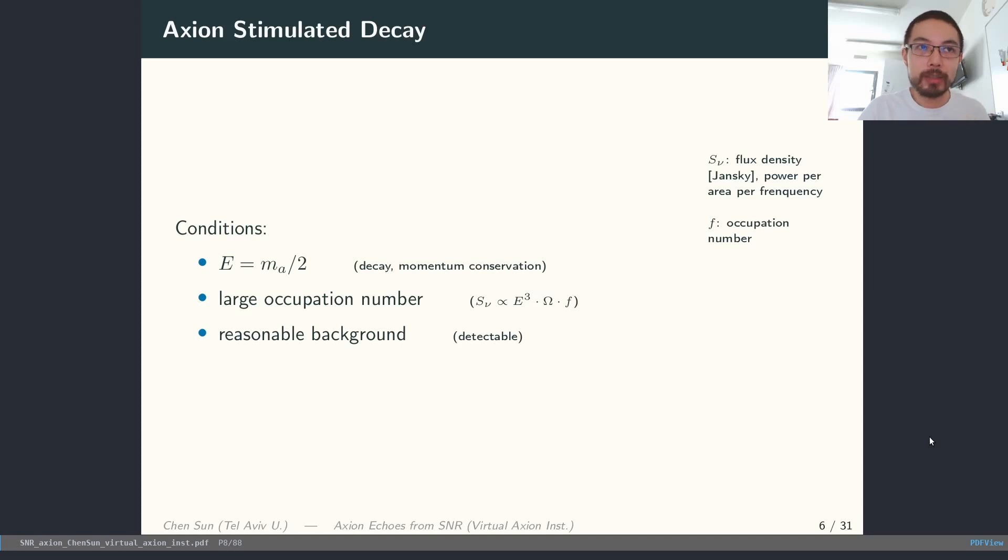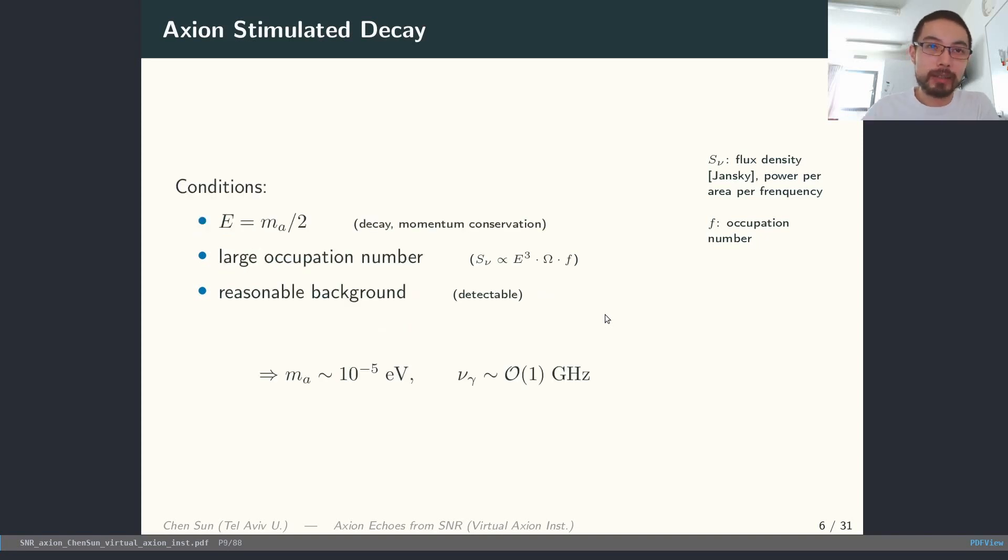Next, because we want the Bose enhancement, which happens only if there is a large phase-space density. In terms of the flux density, if we have a fixed flux density here, which is defined as the power per area per frequency, we want to look at the low energy end such that the phase-space density is large. At the same time, we cannot look at arbitrarily low energy end because we want a reasonable astrophysical background. Put this together, it turns out that the axion stimulated decay in the astrophysical environment is mostly relevant when the axion mass is around 10^-5 eV, which corresponds to a photon frequency around 1 GHz.